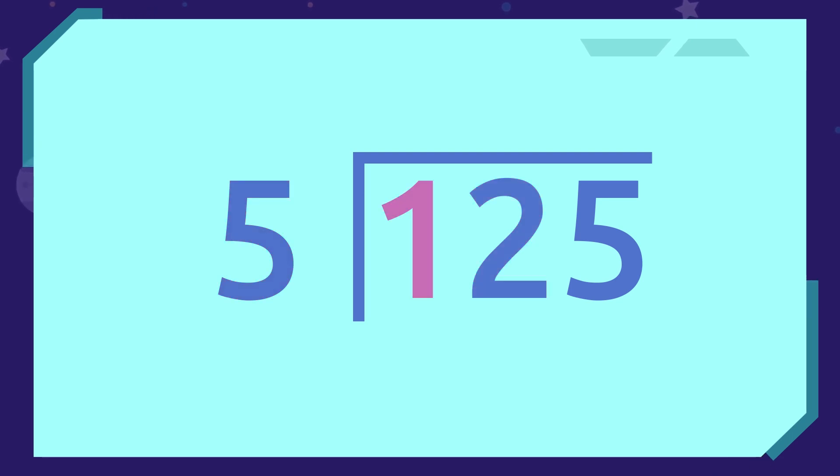In this case, the 1 in 125 is less than 5, so we have to choose the next number in the dividend to do the division. This means we will use the number 12.